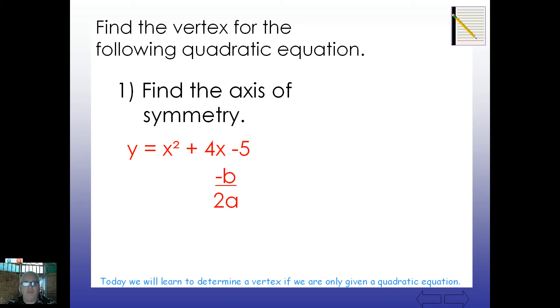We used negative b over 2a. So, we identified a, b, and c. What's a, b, and c here? Well, a is 1, b is 4, and c is negative 5. Now, let's go ahead and plug in the opposite of b. It's going to be the opposite of 4 is negative 4, divided by 2 times 1. So, what is that axis of symmetry? Turns out to be negative 2.